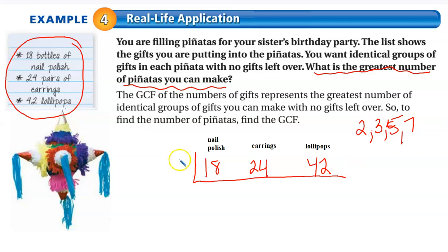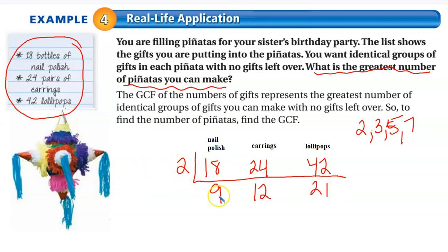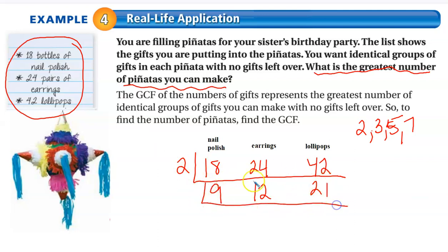And if they're all even numbers, I can divide by two. So now I've got two groups — I can make two piñatas and I can fill them with 9 nail polish bottles, 12 pairs of earrings, and 21 lollipops. But that's only two piñatas. So now I'm going to see if there's another common factor that I can divide by, which turns out is three. And I get three, four, and seven.